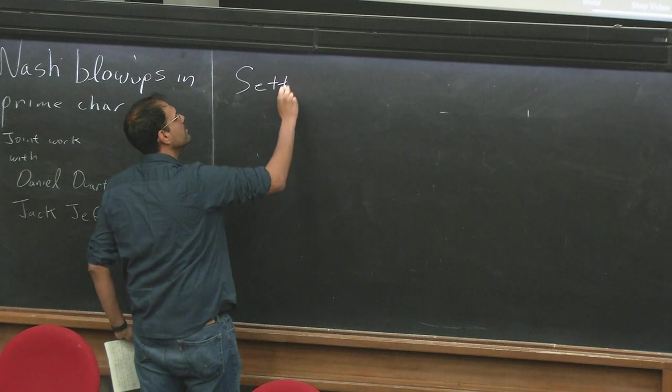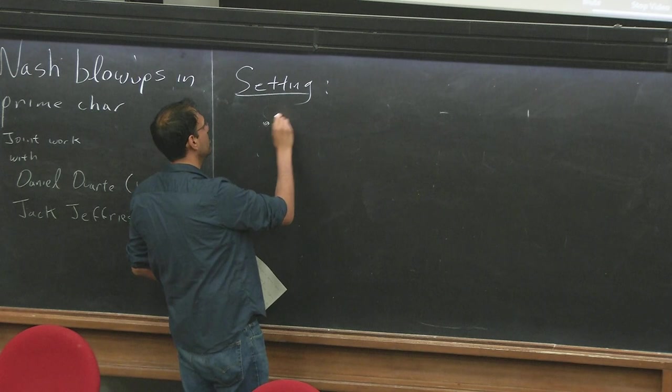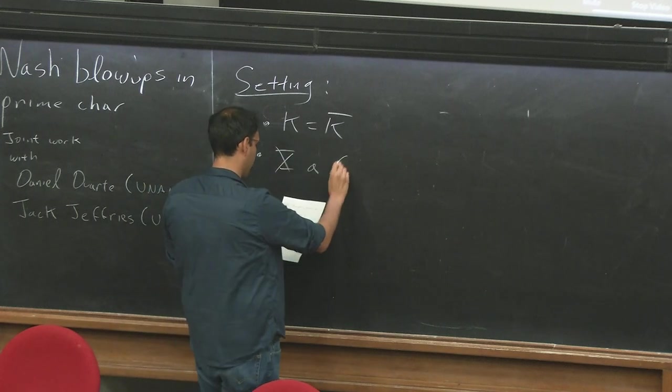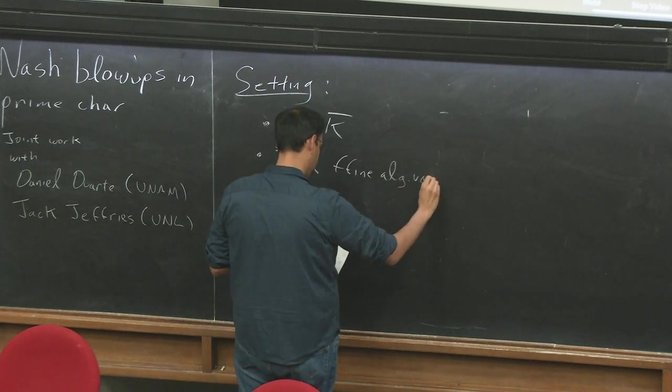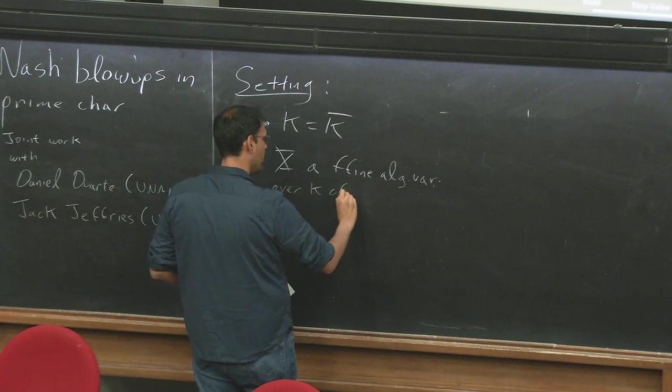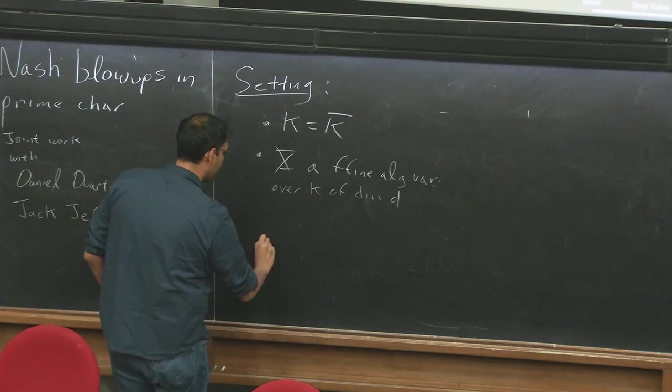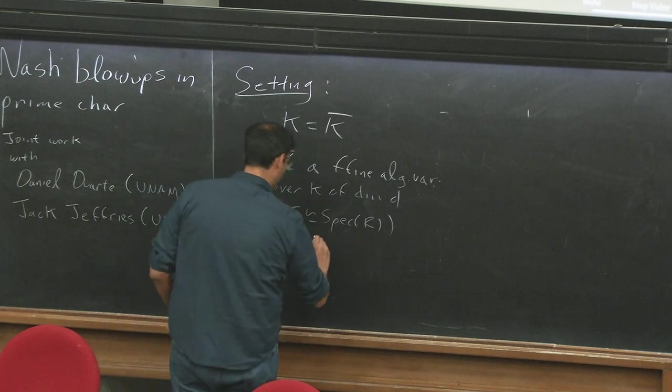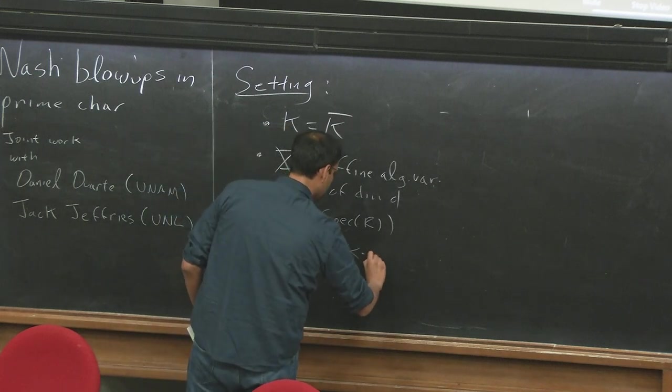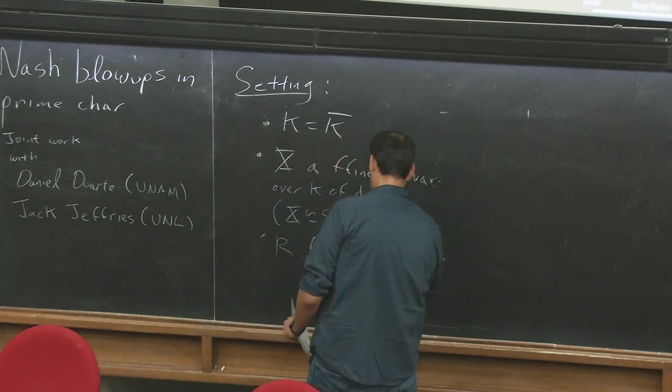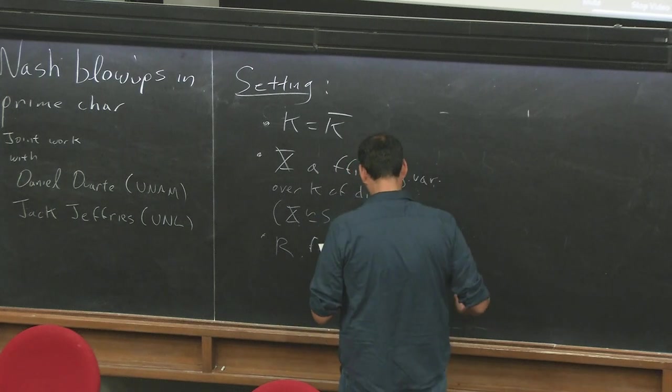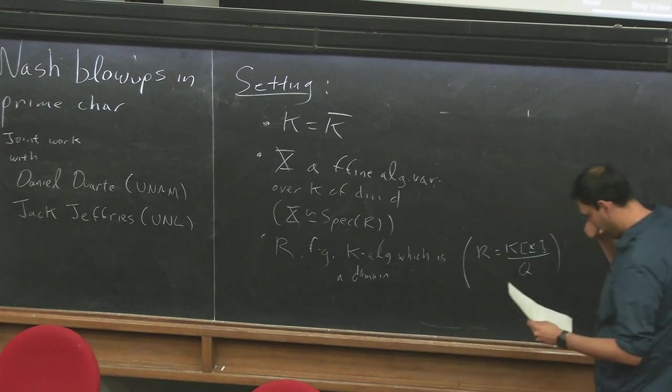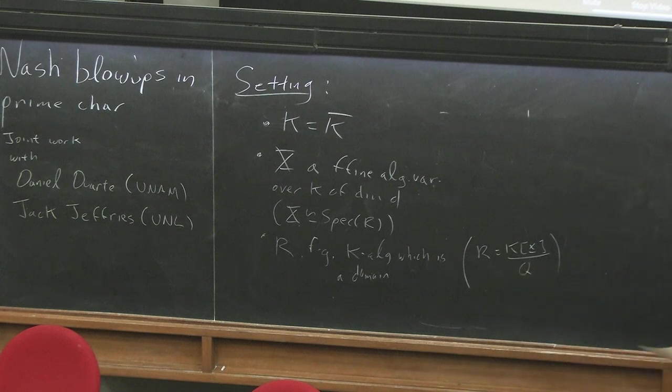Okay, so let me start with the setting for today's talk. For us, K is always going to be an algebraically closed field. Second, X is going to be an affine algebraic variety over K of dimension D. And a lot of times I want to think of X as just the spec of R, and then R is going to be a finitely generated K algebra, which is a domain. So R is just a polynomial ring over a prime ideal. Or sometimes I'm going to take localization of R and also write it as R.